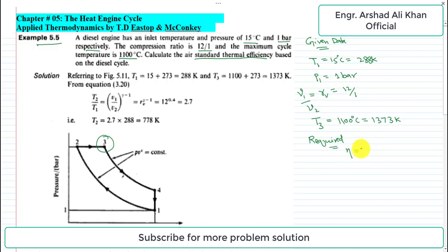First, let's briefly describe the diesel cycle. There are four processes involved. On the pressure-volume diagram: 1 to 2 is isentropic compression, 2 to 3 is constant pressure heat addition or heat supply, 3 to 4 is isentropic expansion, and 4 to 1 is isochoric or constant volume cooling.